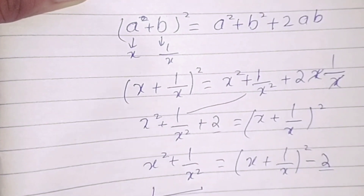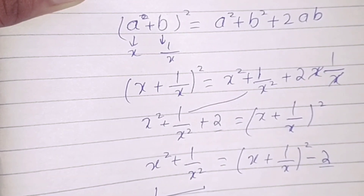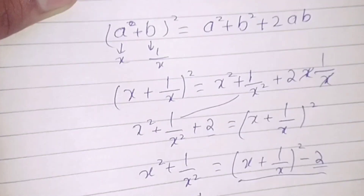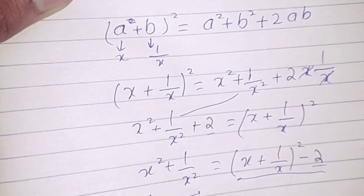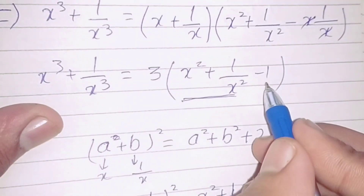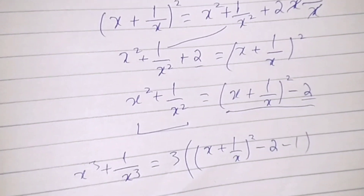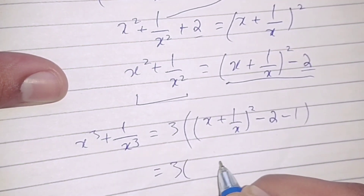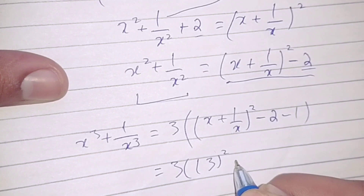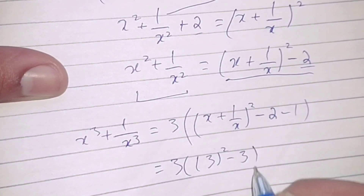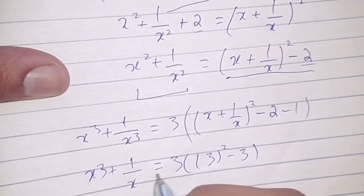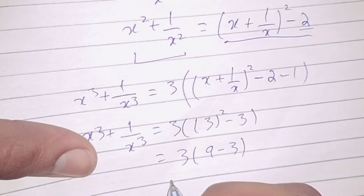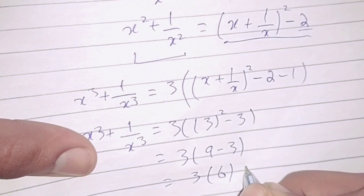So we substitute: x cubed plus 1 by x cubed is equal to 3 into x squared plus 1 by x squared minus 1. We replace x squared plus 1 by x squared with x plus 1 by x whole square minus 2, which gives us 3 into 3 squared minus 2 minus 1. That is 3 into 9 minus 3, which equals 3 into 6, giving us 18.